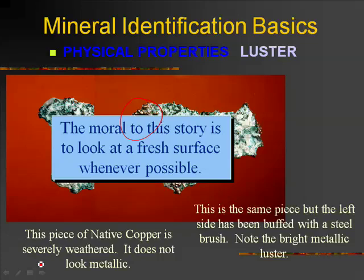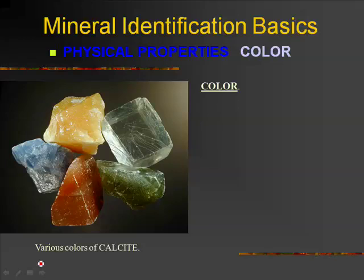Color of a mineral is probably one of the worst indicators there is. For most light minerals, a very small amount of a substance will totally change its color. All of these are calcite — it doesn't matter what color it is. You've got to learn calcite not by its color, but by its other characteristic properties.